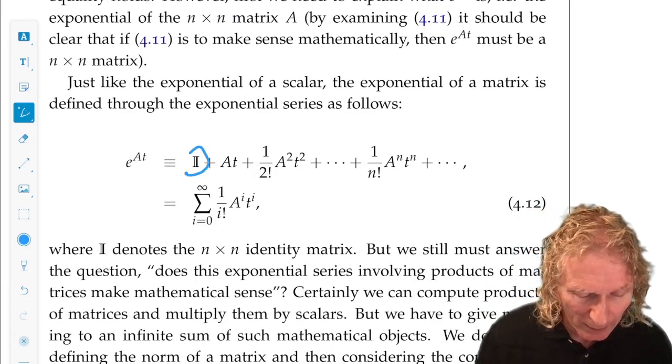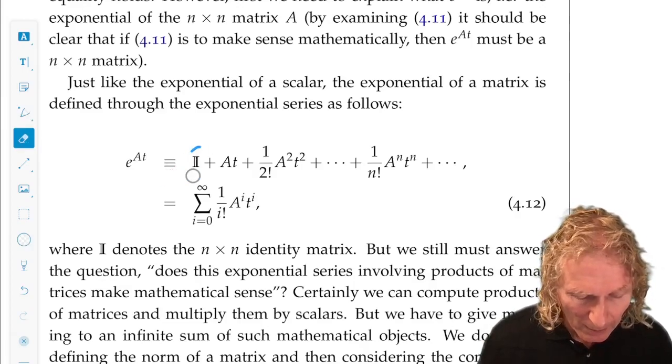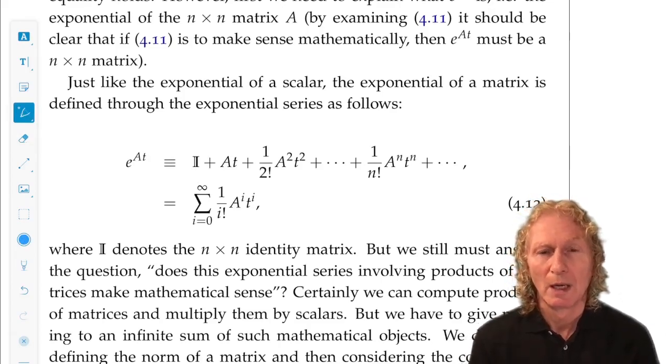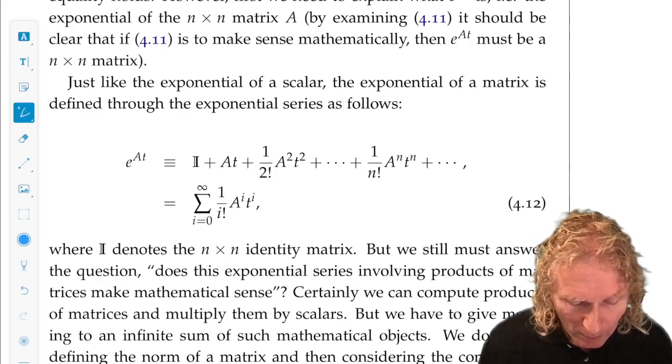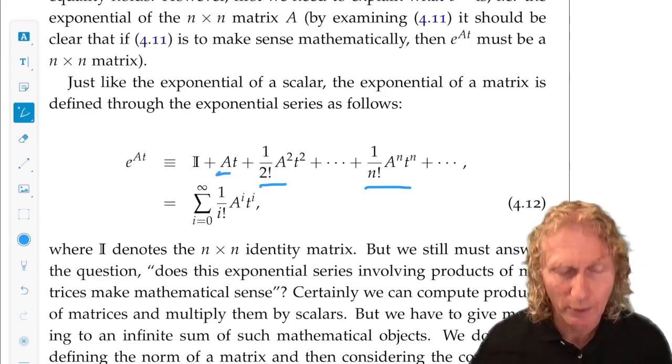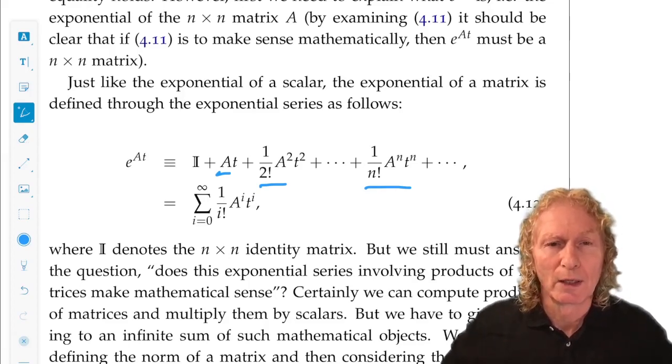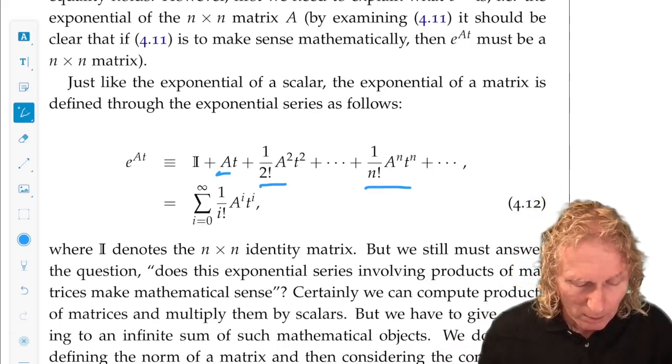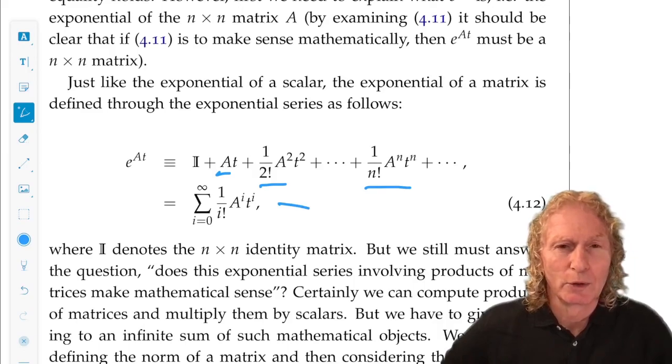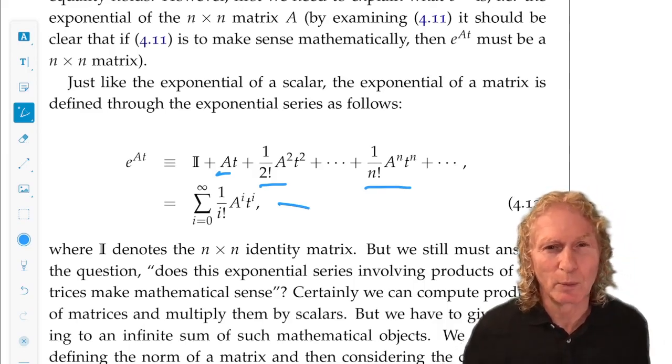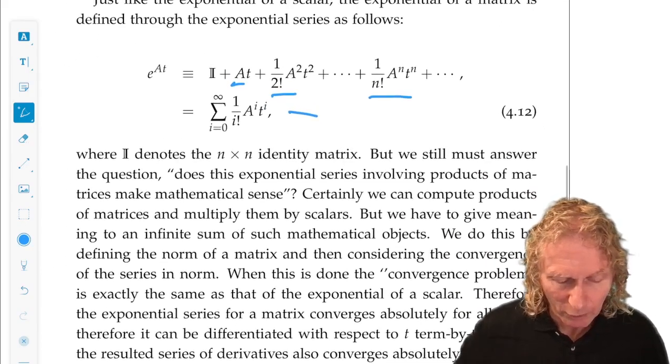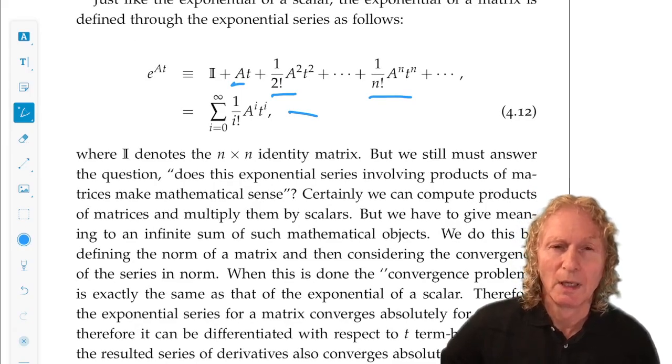And that's what e to the At means. This is the n by n identity matrix here. And then we just have At plus one over two factorial A squared t squared, and so on. Now, each term in the exponential series, we know what it means. We know how to take powers of matrices, add them up, multiply them by scalars, and this is what the exponential means. Now, does it converge? What does this mean as a series? That I'm not going to go through in a lot of detail. I've given you some references, but it converges absolutely.